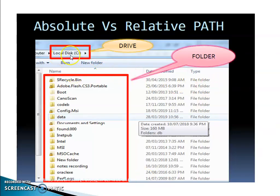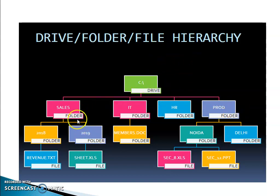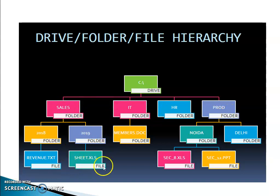In this picture you can see C: as the drive. All the folders are shown with folder symbols. This drive hierarchy shows C drive with main folders: Sales, IT, HR, and Product. These are the main folders under C drive. Then there are subfolders under Sales, IT, HR, and Product, and these are the files within them.